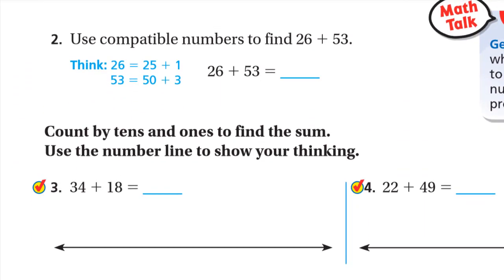Number two. Use compatible numbers to find 26 plus 53. Think the 26, he made it for us 25 plus 1. And the 53, 50 plus 3. So if we added, what will we have? 1 plus 3 is 4. Plus 25 plus 50 is 75. So what is 75 plus 4 is 79. 4 plus 5 is 9. And I write the 7.